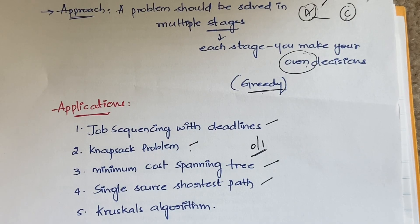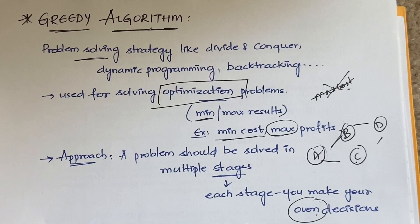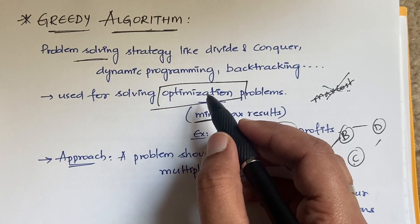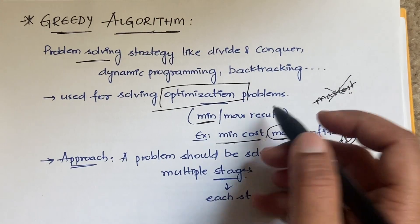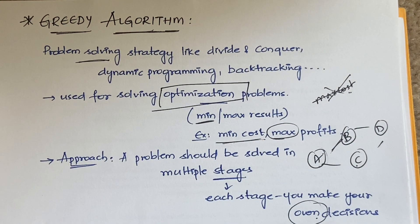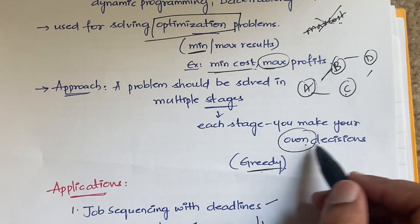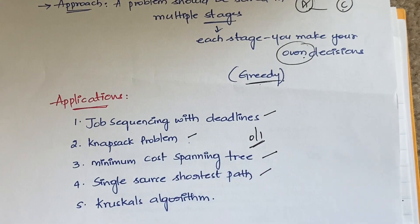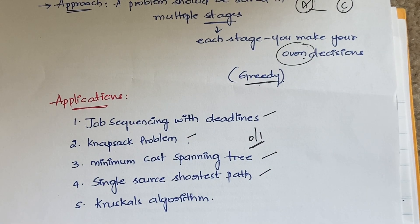So that's all for this video — a quick introduction to the greedy algorithm. It is basically a problem-solving strategy, same as divide and conquer and dynamic programming. It is mainly used for solving optimization problems, where you get minimum or maximum results, and at each and every stage you make your own decisions. I hope everyone is clear. Let's meet in the next videos, starting with the applications of these algorithms. Thanks for watching — have a good day!